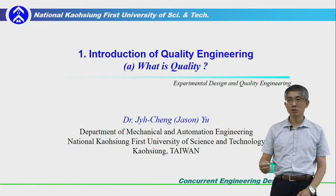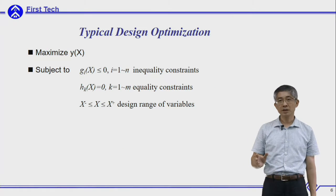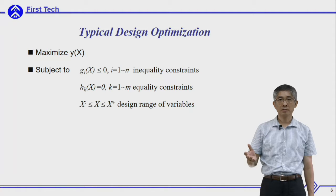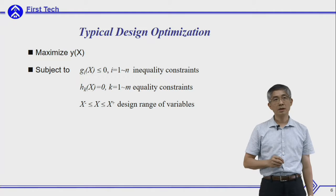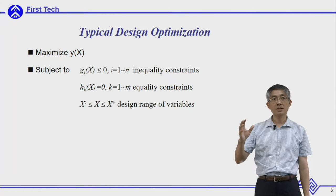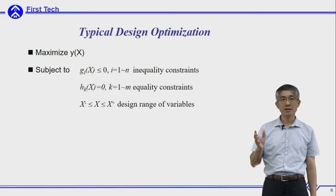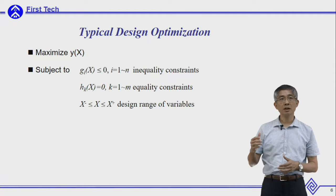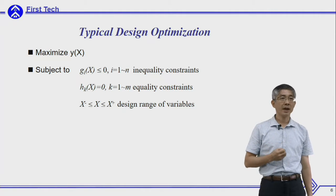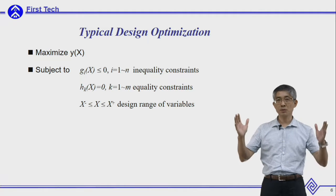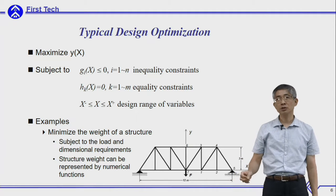First I would like to talk about what is quality. As I mentioned, engineering optimization is very common in industries. What is design optimization? Using a numerical example: if you want to maximize y, and y is a function of variable x, and this variable x has some constraint — either an inequality constraint like g(x) or an equality constraint like h(x) — and this variable x has to be within a certain design space.